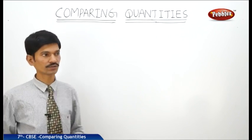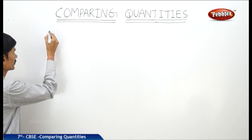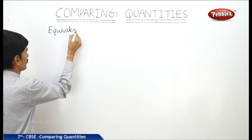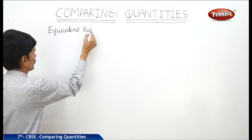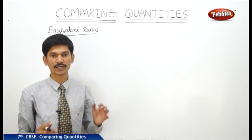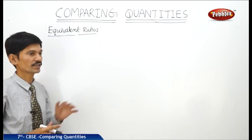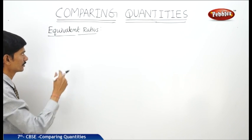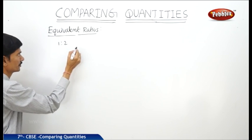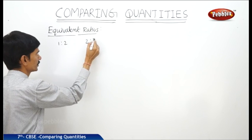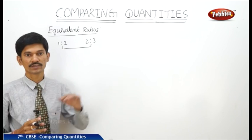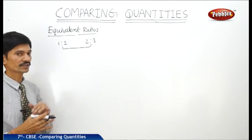Now let us see equivalent ratios. What are equivalent ratios? Two different ratios can be compared with each other to know whether they are equivalent or not. How do we compare two ratios? For example, the first ratio is 1 is to 2 and the second ratio is 2 is to 3. By comparing these two ratios, we have to decide which ratio is bigger and which is smaller.